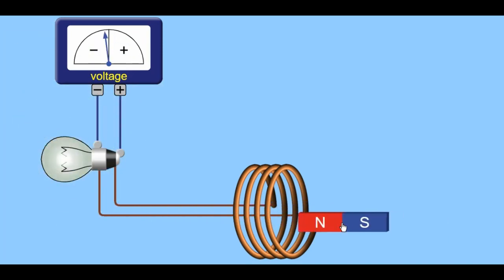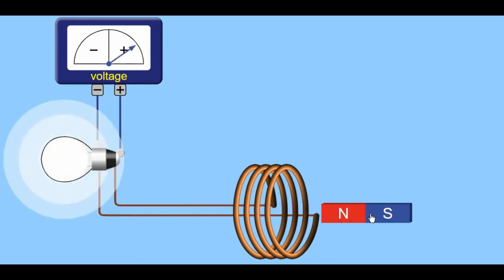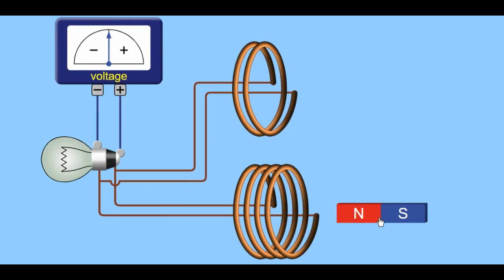Looking at the magnet moving relative to the coil, as the north pole moves to the left, the voltage moves to the left. As the magnet moves to the right, the voltage moves to the right. The faster the magnet moves, the greater the voltage.